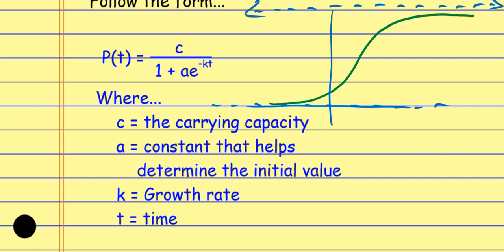You might look at this and say: how is it growth if it's a negative KT? Well, that's in a denominator, so a negative exponent in a denominator is almost like having something in a numerator. So: population based on time equals the carrying capacity divided by one plus A times E to the negative KT, where A is a constant value associated with the initial amount.